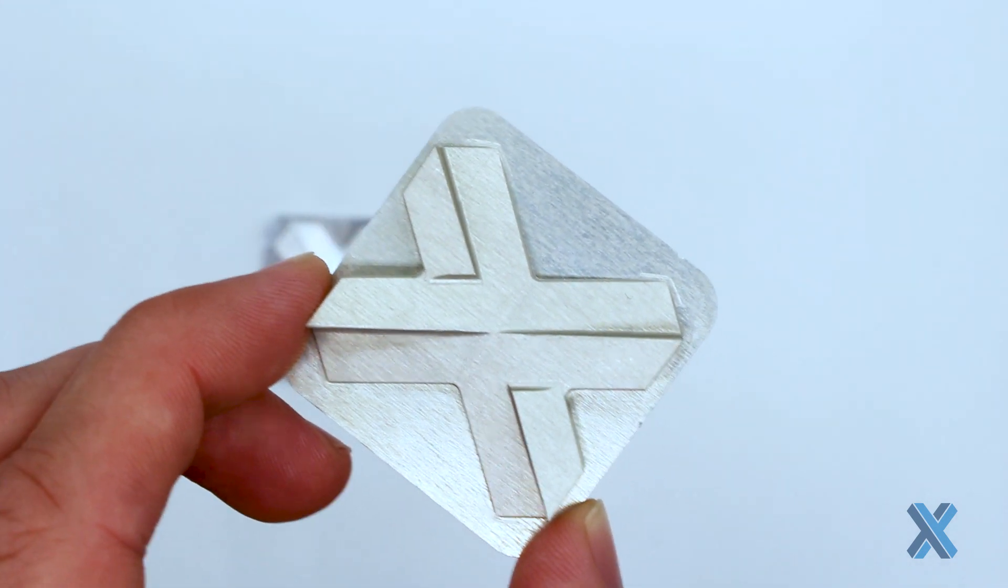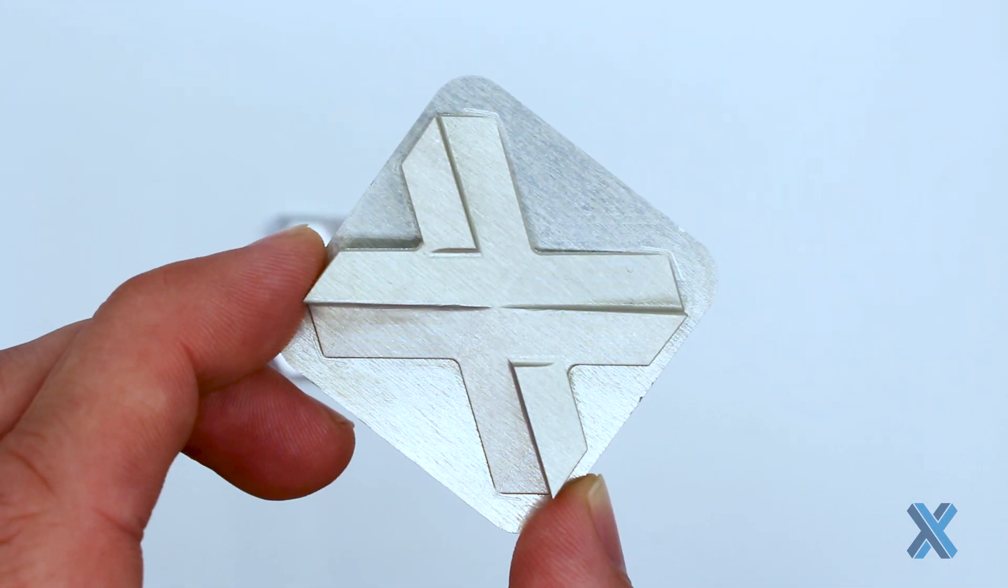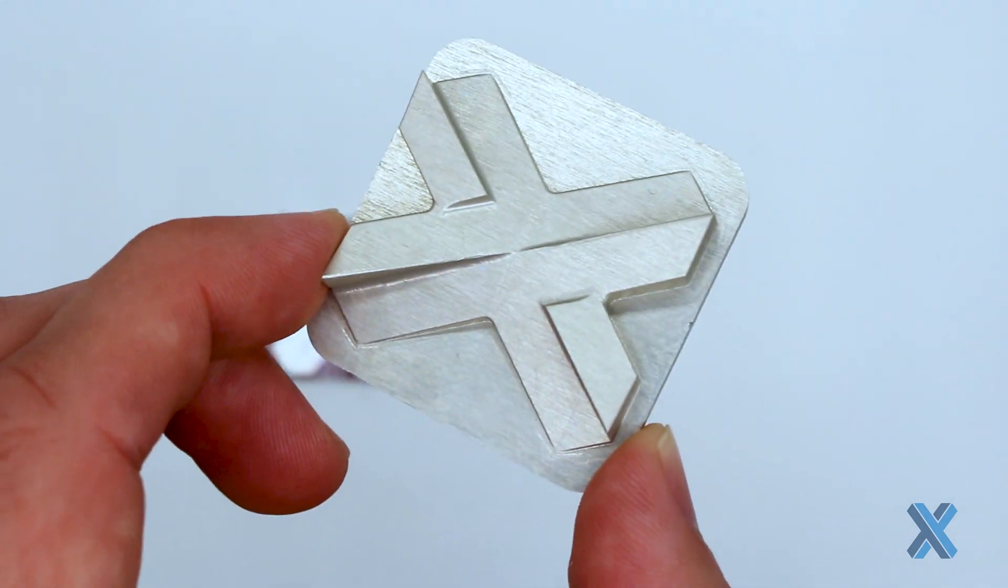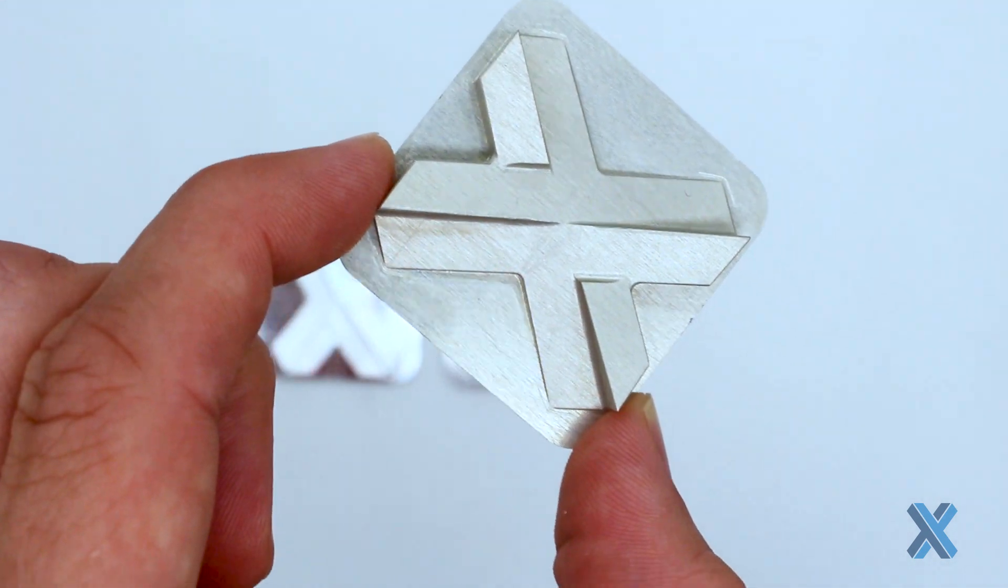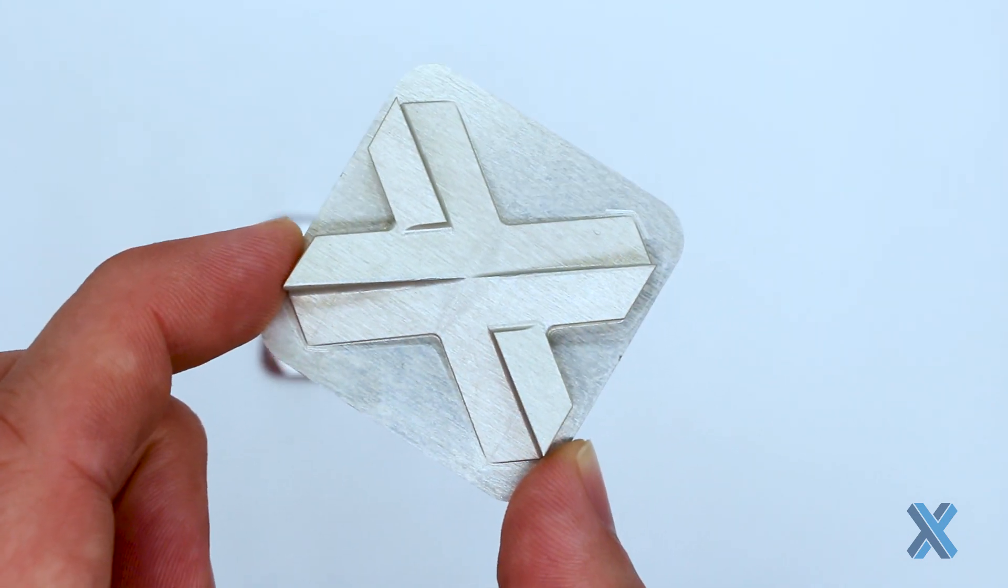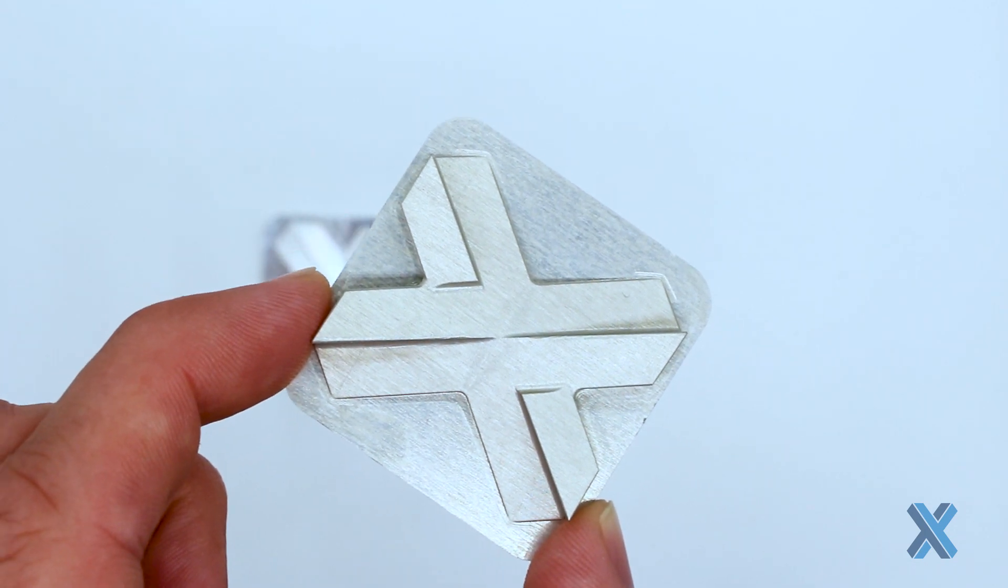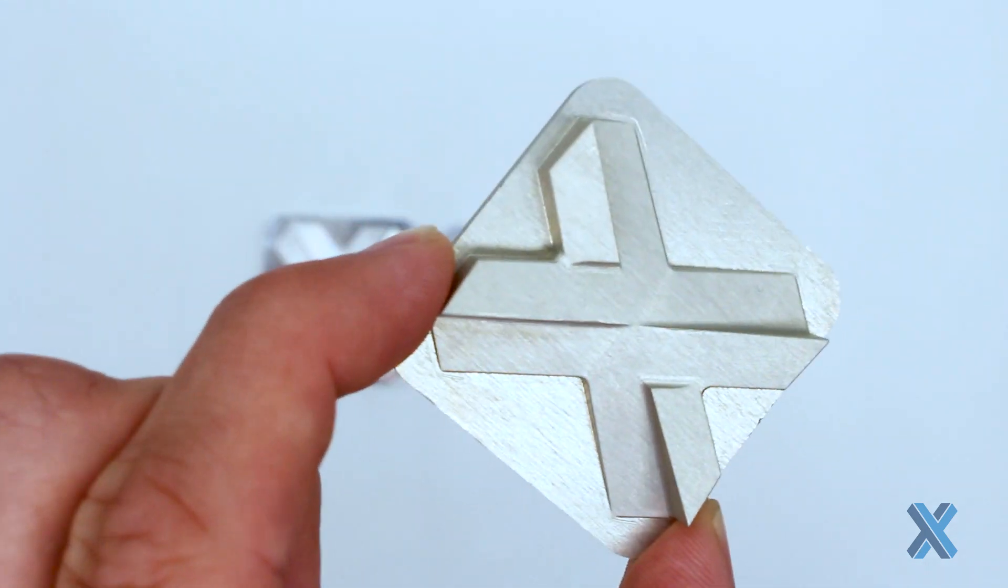And this is a Type 2 Class 1 clear anodize per MIL-A-8625. So just understand that when you ask for these different surface finishes, you may end up getting a more matte surface finish with a higher surface roughness to it and maybe a little bit of cloudiness.